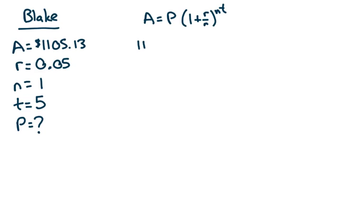Substituting in, A is 1105.13. P we don't know. R is 0.05. N is 1. The exponent ends up being 1 times 5. Working this out.